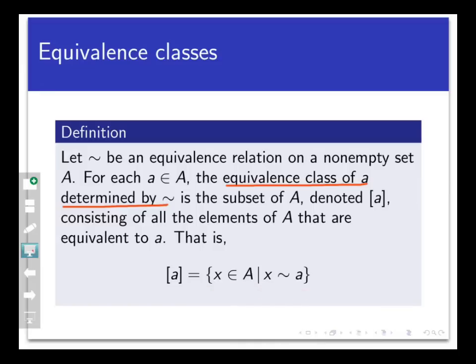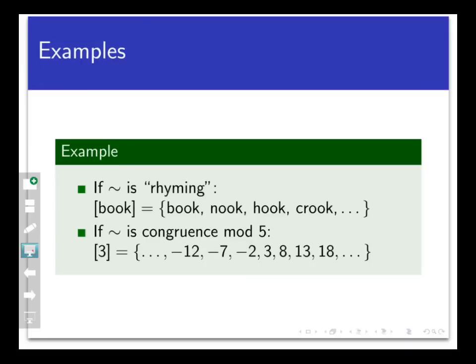if ~ is the rhyming relation on the set of words in the English language, then the equivalence class of book is just the set that we saw earlier. It's the set of all words that rhyme with book. And if ~ is the equivalence relation given by congruence mod 5 on the set of integers, then the equivalence class of 3 is the set that we saw earlier, the set of all integers that are congruent to 3 mod 5. That's what equivalence means in that context.